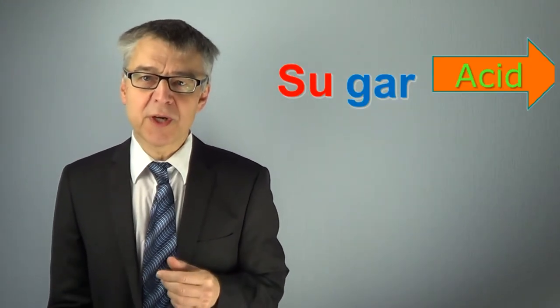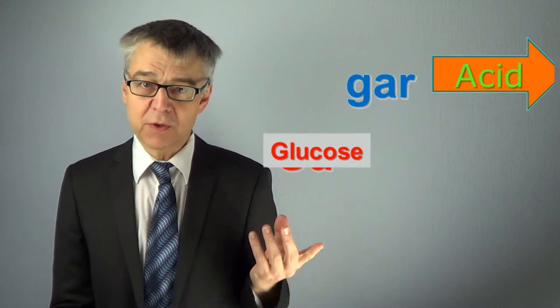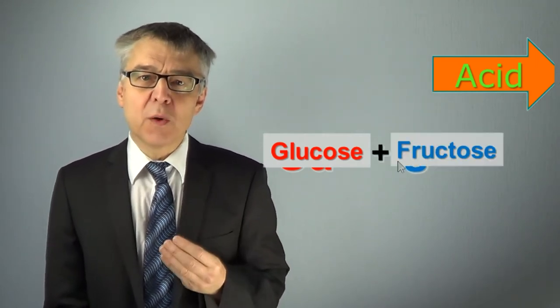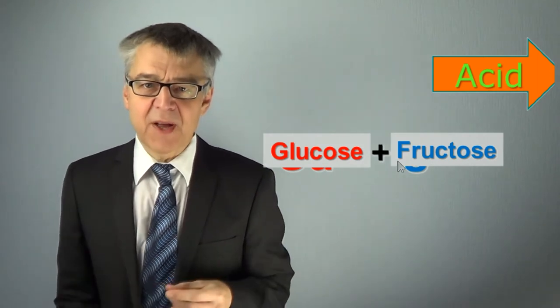The acid will split table sugar into its components, glucose and fructose, and heat will create a caramel-like flavor and coloring.